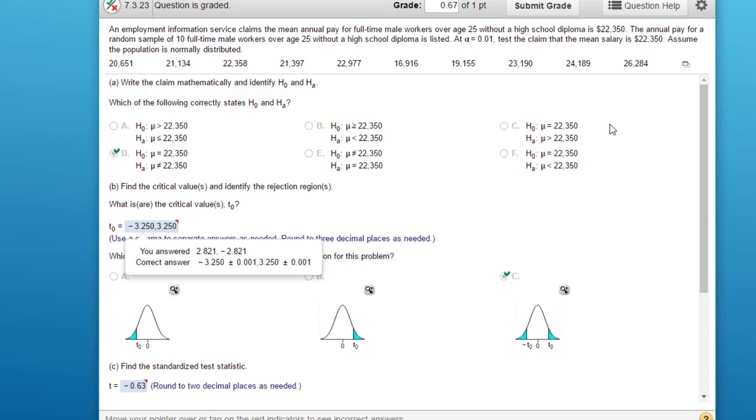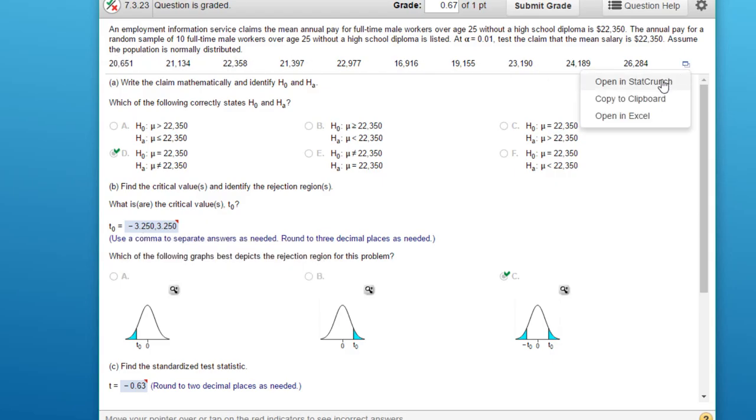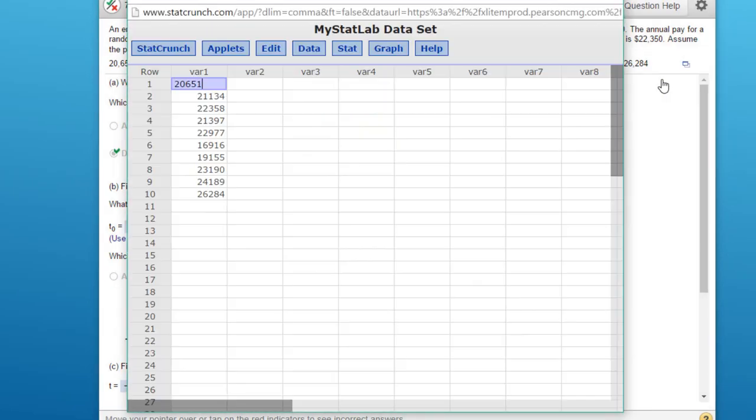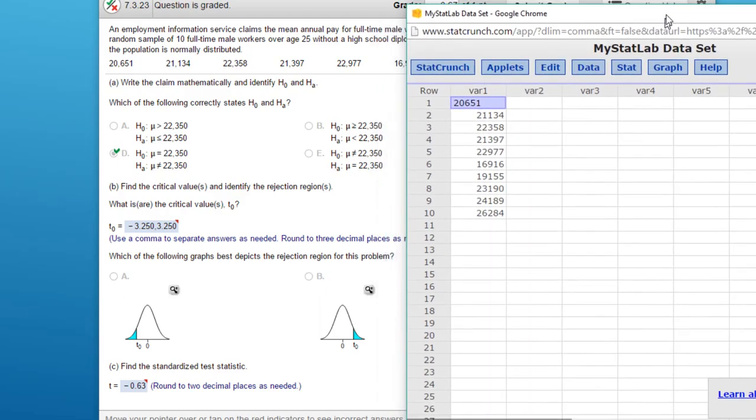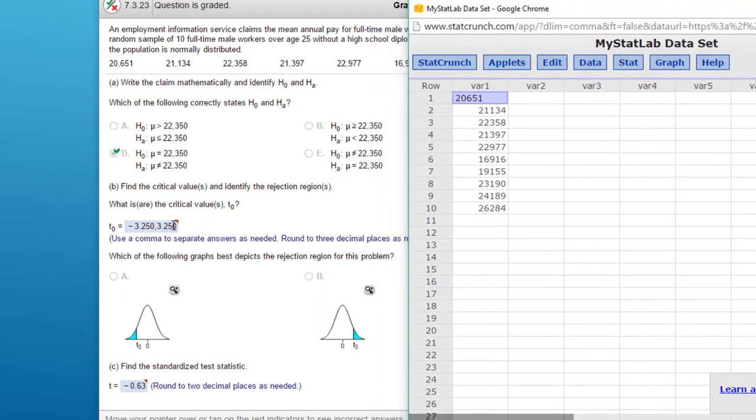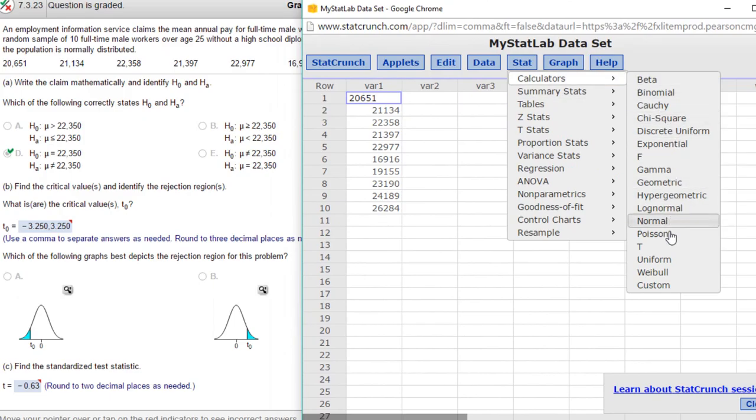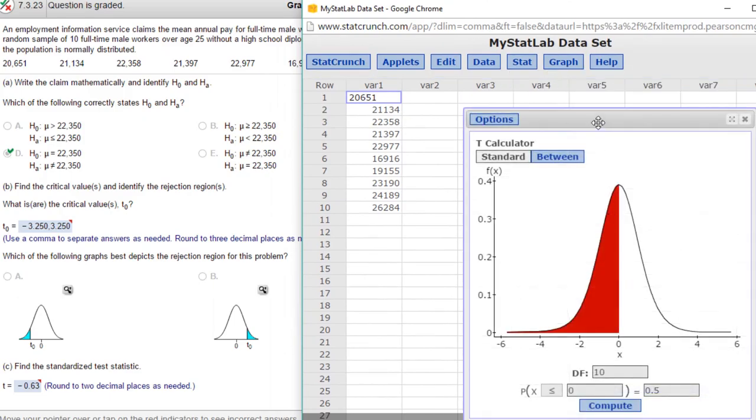I want to bring up StatCrunch, and we can do that here because we've got data and we've got the little icon. I'm going to open that in StatCrunch and bring that up. And the first thing I want to do is try to find this critical value of T. So we go into Stat, Calculators, T Calculator.